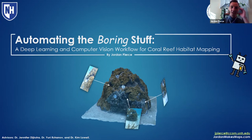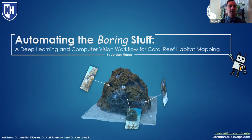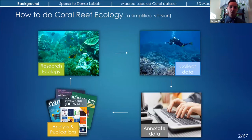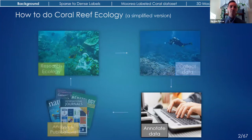Thanks, Jen. I appreciate it. And thank everyone for coming. I really do appreciate it. So I'm going to go ahead and start. Just to reiterate, my name is Jordan Pierce. I'm a master's student studying oceanography. For my thesis, I looked at ways to automate the mapping of coral reefs, both in 2D and 3D, using deep learning and computer vision algorithms. Obviously, ecology is much more complex than what I show here. I just wanted to present the part of the general process that I am most interested in.